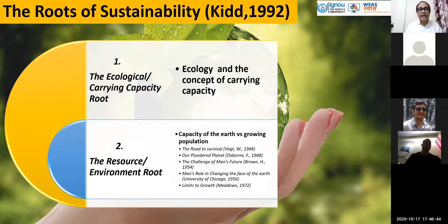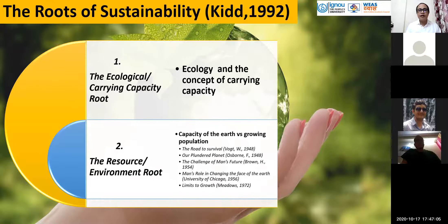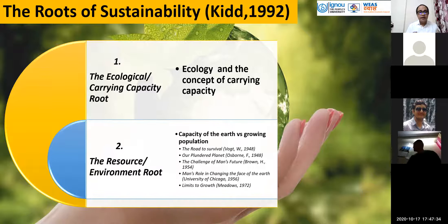The resource environment route recognizes that in ecology, at a species level, the number of population is directly related to the availability of food. The concept of sustainability is explained in terms of carrying capacity in ecological terms. The root concept of the resource environment route is the capacity of Earth versus growing population. Publications like 'Road to Survival,' 'Our Plundered Planet,' 'Limits to Growth' by Meadows in 1972, and others talk about this concept.